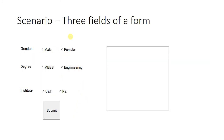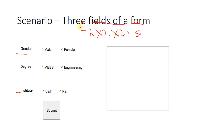Next, let us see a scenario. Suppose we have a web form with three fields: gender, degree, and institute. The first field has two values, the second field has two values, and the third field also has two values. If we test this form with the simple combinations technique, we get two times two times two equals eight test cases. But if we use the technique of pairwise testing using orthogonal arrays, the number of test cases will be reduced. First, we need to find a suitable orthogonal array for this scenario.